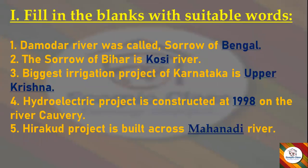Let's get started with the fill in the blanks. The mother river was called the sorrow of — answer: Bengal. The sorrow of Bihar is — answer: Kosi River. The biggest irrigation project of Karnataka is — answer: Upper Krishna. The hydroelectric project is constructed at — on the river Kawari. The Hirakud project is built across — answer: Mahanadi River.